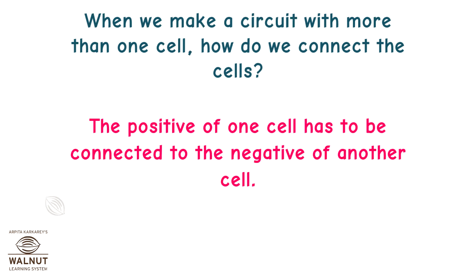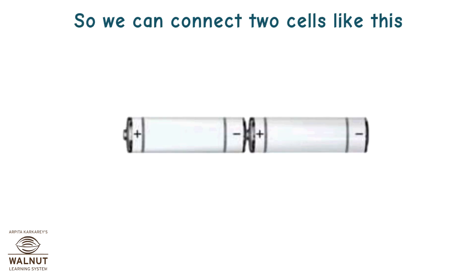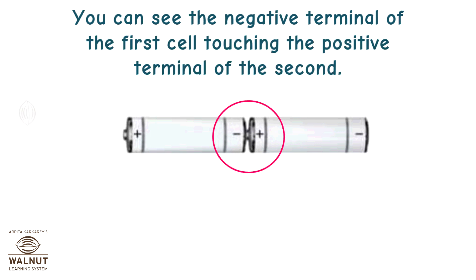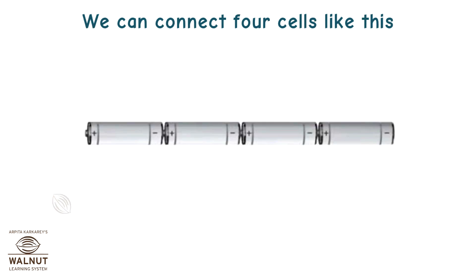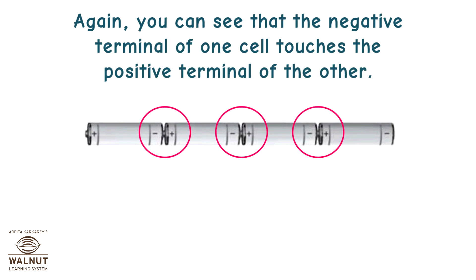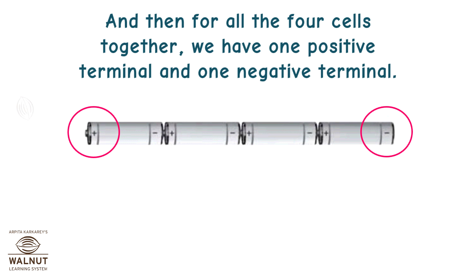When we make a circuit with more than one cell, how do we connect the cells? The positive of one cell has to be connected to the negative of another cell. So we can connect the two cells like this — you can see the negative terminal of the first cell touching the positive terminal of the second. For all four cells connected together, we still have one positive terminal at one end and one negative terminal at the other.